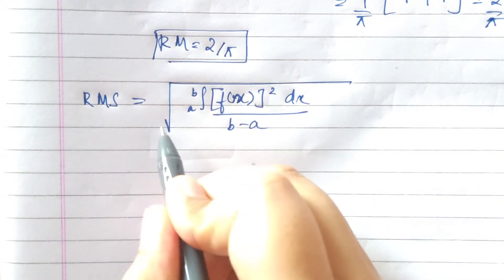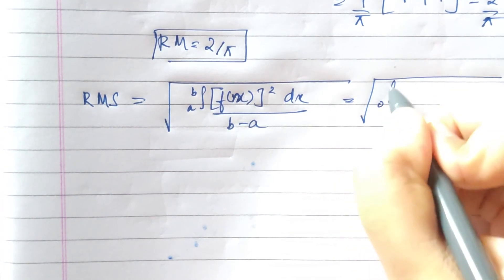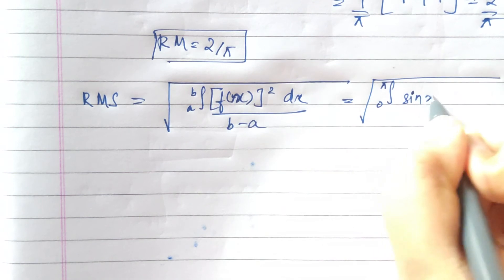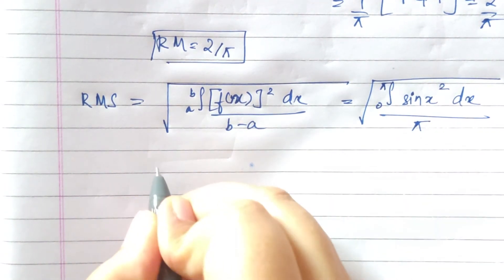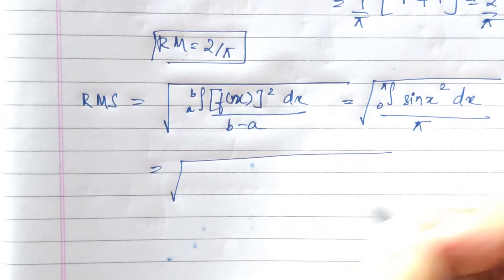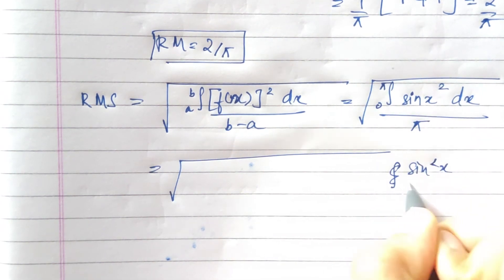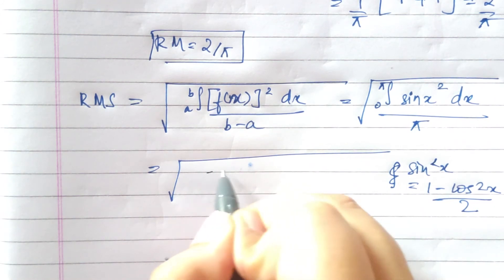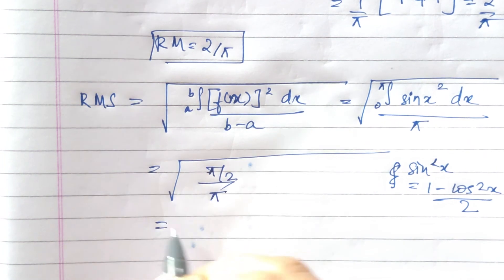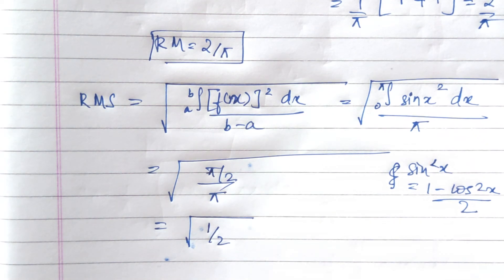Now finding the RMS value: we write the formula and substitute — integral from 0 to π of sin²(x) dx, divided by π. Using the identity sin²(x) = (1 − cos(2x))/2 and evaluating gives π/2, so RMS = √(π/2 ÷ π) = √(1/2). Therefore, the RMS value is 1/√2.